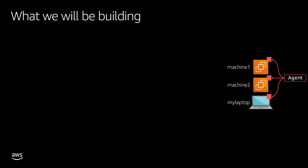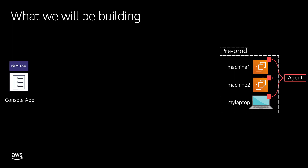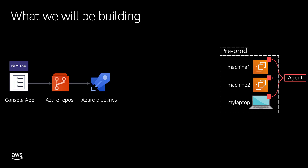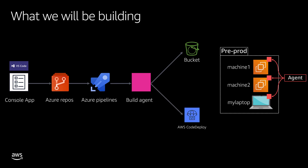Once you have this agent installed, we are going to create a pre-production deployment group and then write a very simple .NET Core console application. We'll put that application into an Azure repository and kick start an Azure pipeline. With the help of a build agent, we are going to push the software we built as a zip file into an S3 bucket, and then invoke AWS CodeDeploy to deploy that software into the deployment group we have defined as pre-production.